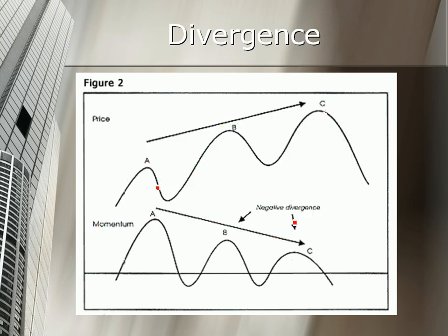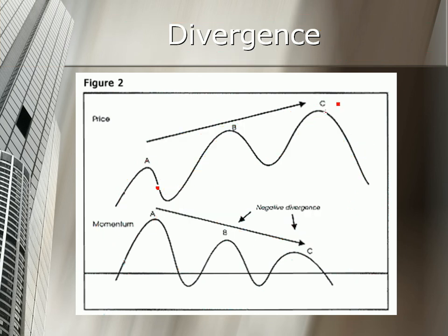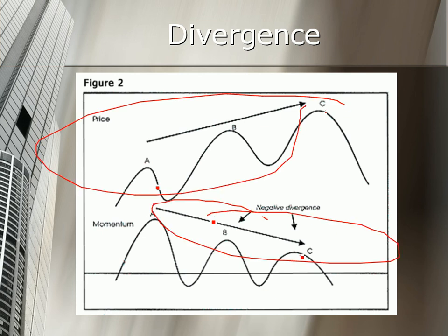By waiting for a divergence setup, some kind of setup like this, we ensure we get in at a higher probability trade of a downward move.